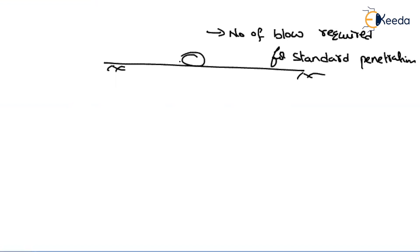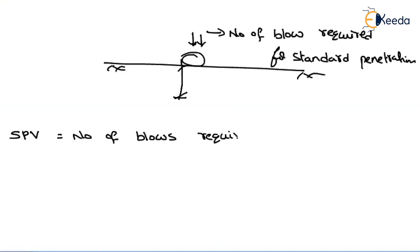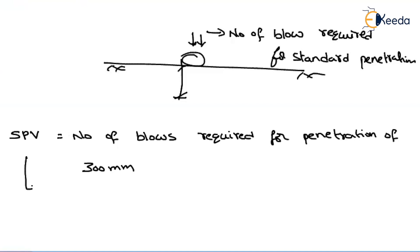The standard penetration value is the number of blows required for penetration of 300 mm. That means to reach 300 mm penetration, we count how many number of blows are required. That count is nothing but the standard penetration value.